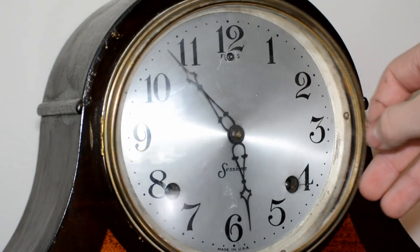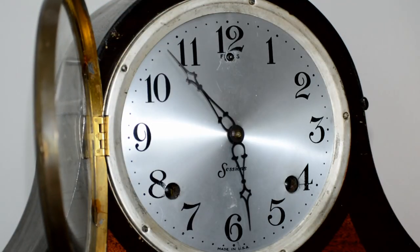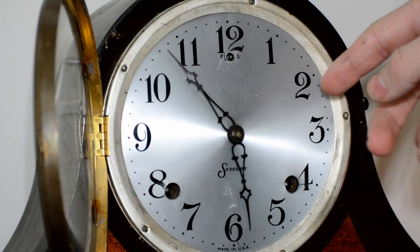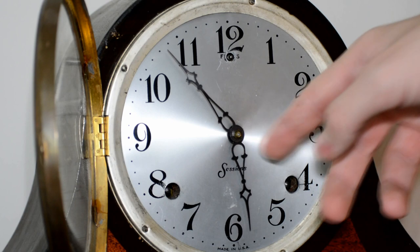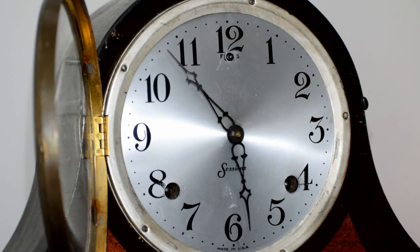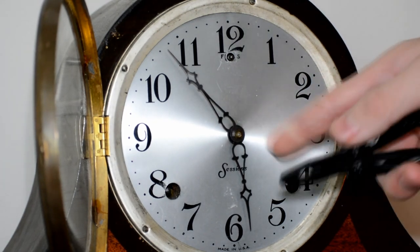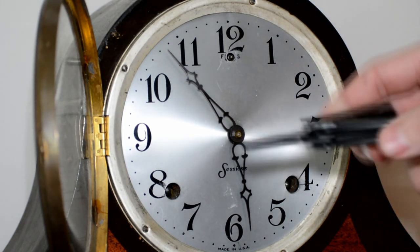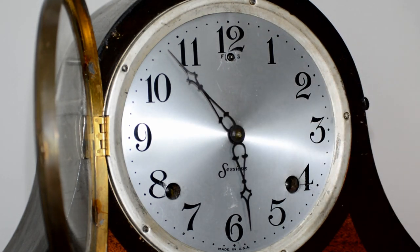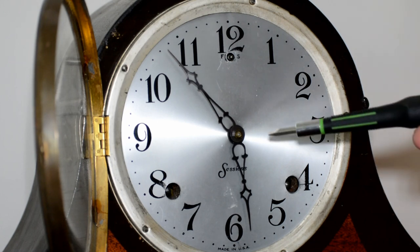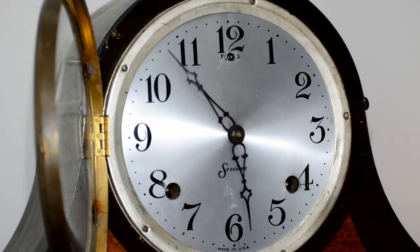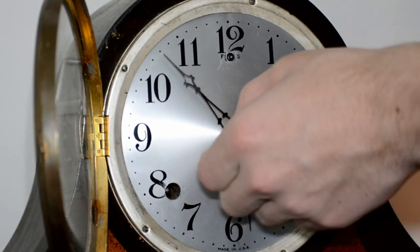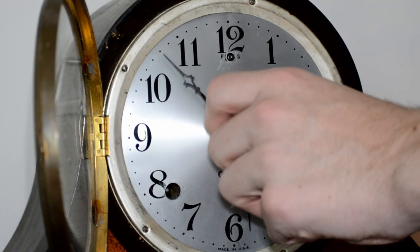Alright, so you're going to open the door. The first thing you want to do is take off the minute hand and then the hour hand. Most of them have a little nut right there that you can unscrew with your hands or with pliers if needed. Sometimes they have a pin that you slide out, and then you pull both hands off. I'm going to unscrew the nut with my fingers.